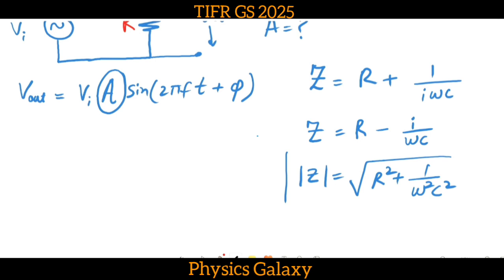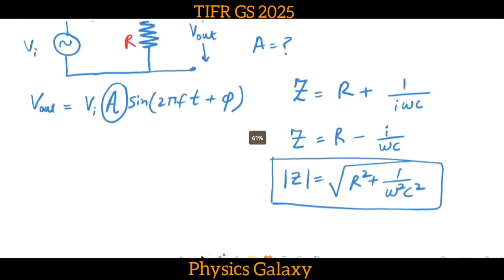Now, what do I have to find? Vout has this magnitude part and the oscillating part. So what is the magnitude of V_out? That is V_i times A.